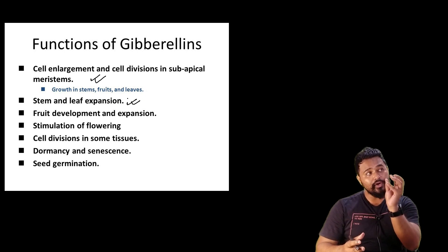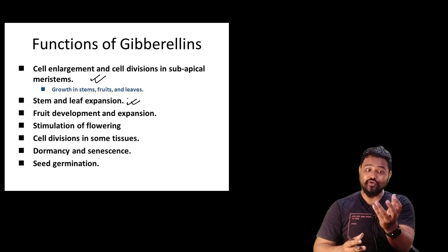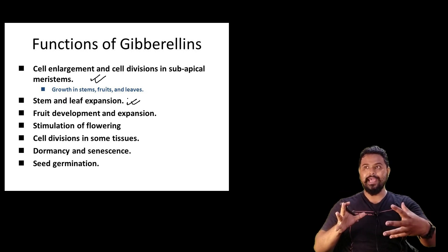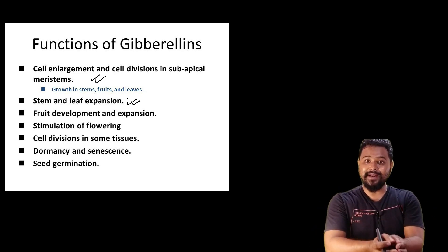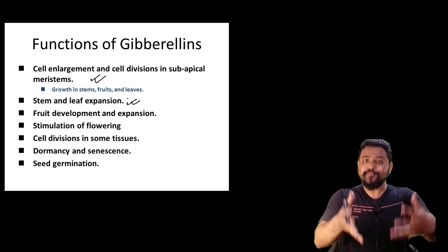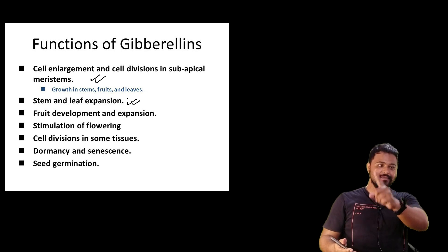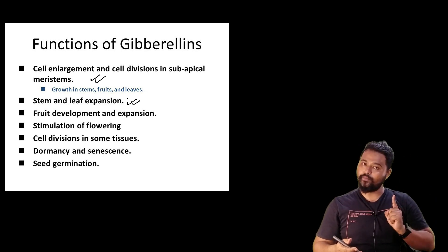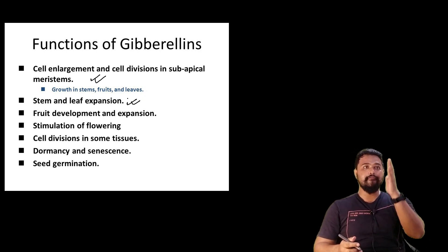Fruit development — normally fruit enlargement occurs. Gibberellin is a very important hormone. It means that it is commercially very important. As a farmer, as a horticulturist, as a scientist, as a nursery worker — this is a scientific background.